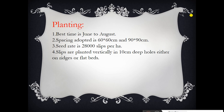The best planting time is June to August. Spacing is 60×60 cm or 90×90 cm. Seed rate is 28,000 slips per hectare. Slips are planted vertically in 10 cm deep holes, either on ridges or as a flat bed method.